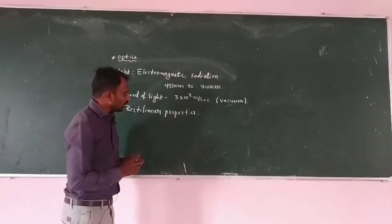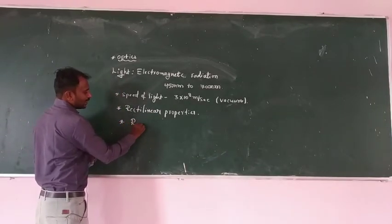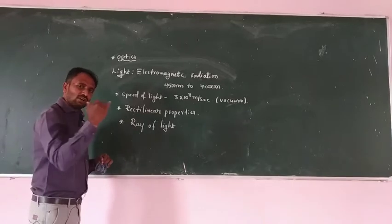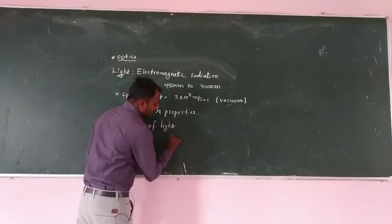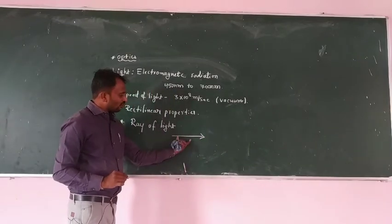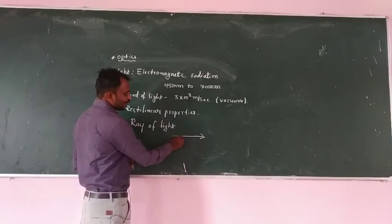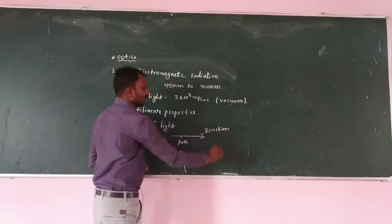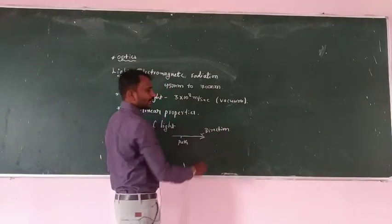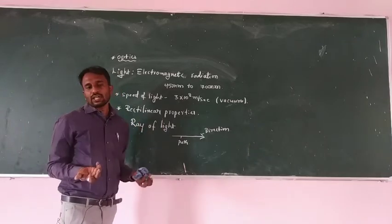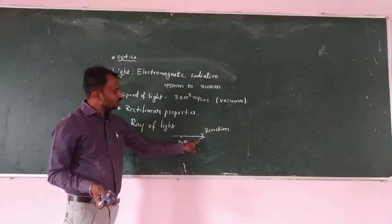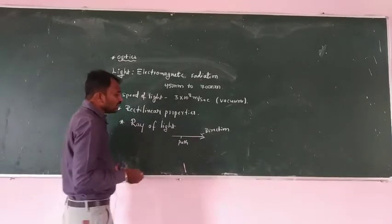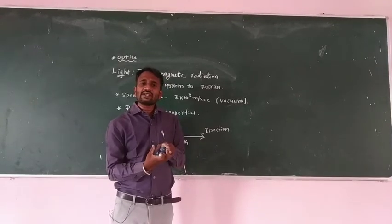A ray of light: since light travels along a straight line, a ray of light is nothing but a straight line with an arrow. The straight line represents the path and the arrow represents the direction. Without the arrow, we cannot tell whether light travels left to right, right to left, upward, or downward — so we must draw the arrow to indicate direction.